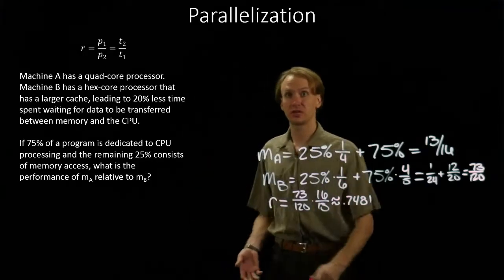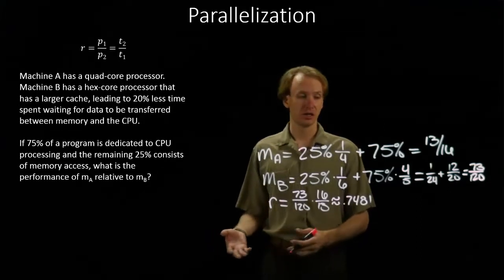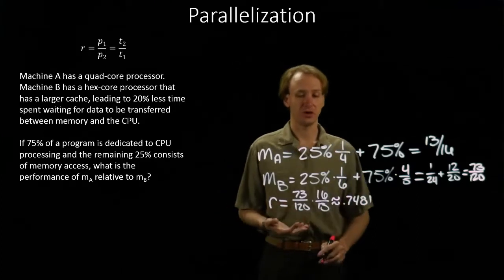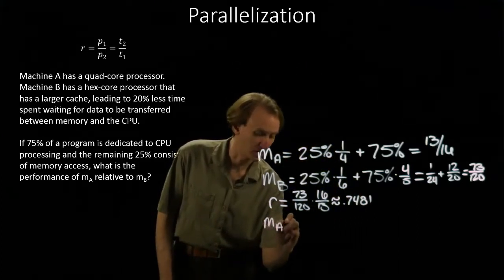Now if we flip that around so that seventy-five percent of our program is dedicated to CPU processing, and the other twenty-five percent is for memory, then we'll get some different results. But the basic algorithm is the same.